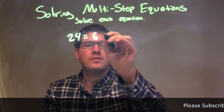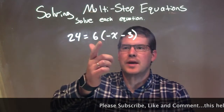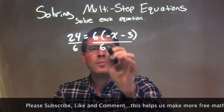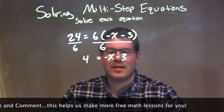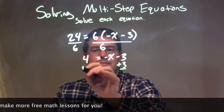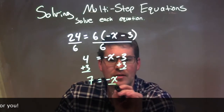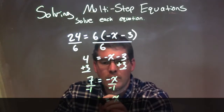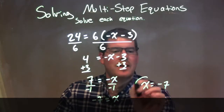24 equals 6 times (negative x minus 3). I see multiplication between 6 and what's inside the parenthesis. So I divide by 6 on both sides, leaving negative x minus 3 on the right, and 24 divided by 6 is 4 on the left. Now I add 3 to both sides: we have positive 7 equals negative x. That negative x can turn into positive x — I divide by negative 1 on both sides. 7 divided by negative 1 is negative 7. So x equals negative 7.